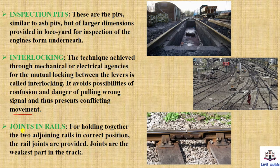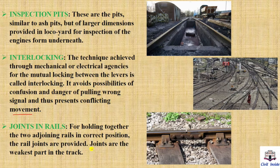Joints in rails. Joints are provided for holding together two joining rails in the correct position. The joints are the weakest part of the track. If you want a full video about the types of joints, you will find the link in the description.